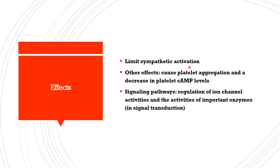Other activities reported include that alpha-2 agonists cause platelet aggregation and a decrease in platelet cyclic adenosine monophosphate levels. However, this mechanism is not clearly laid out, and they also use other signaling pathways, regulating ion channel and enzyme activities as well.